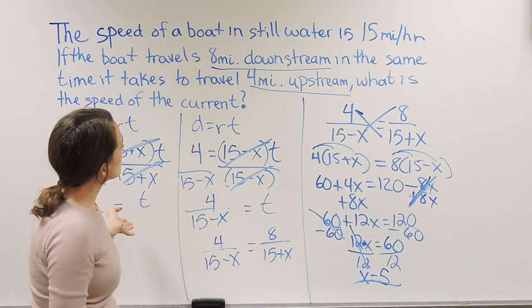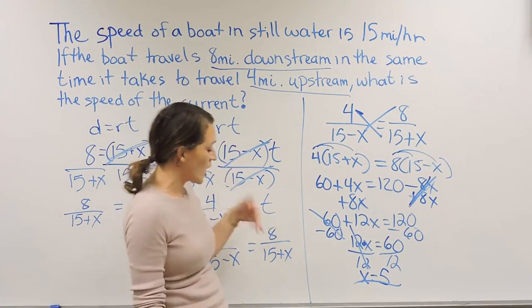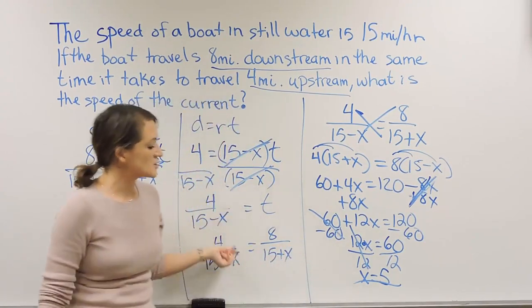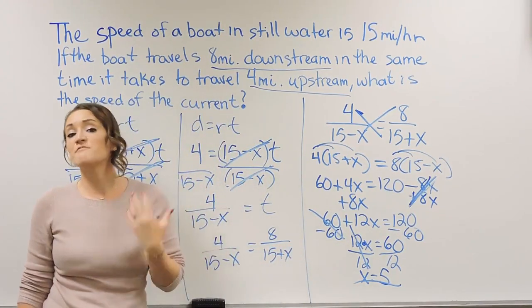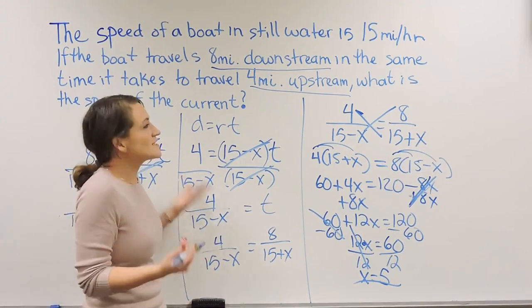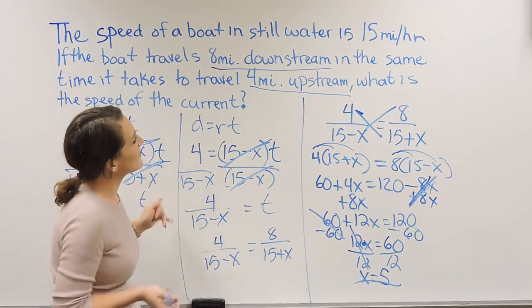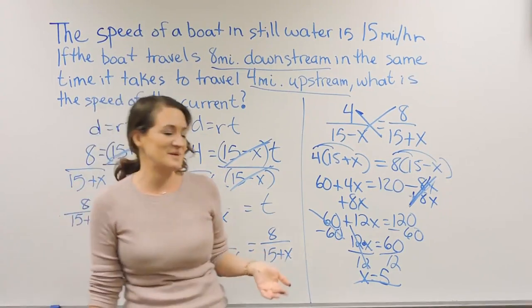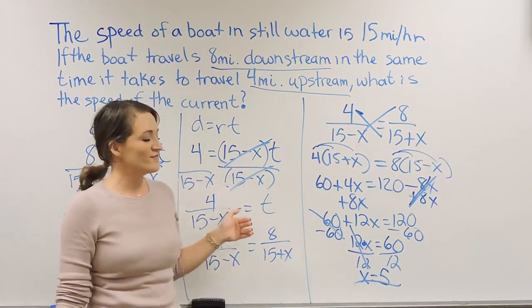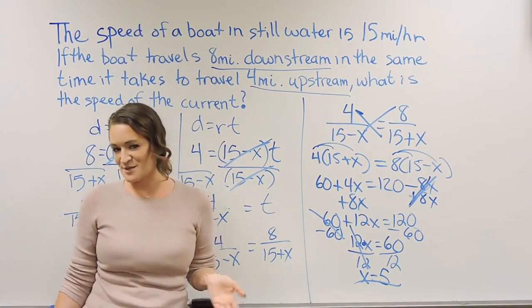Going back up to the question, it asks us to solve, what is the speed of the current? So that just means the current is 5 miles per hour, which essentially almost, when you think about it, it says that the water is still, so technically it shouldn't be moving, but we've just solved and figured out that it's going at 5 miles per hour.